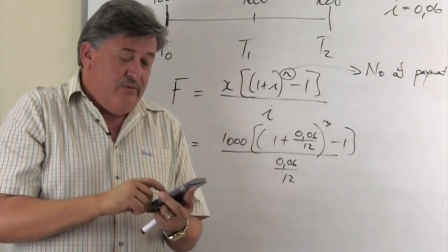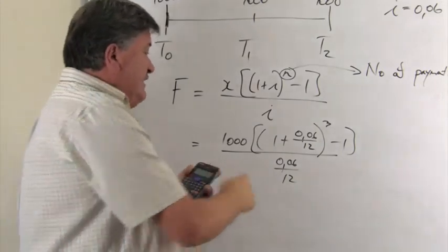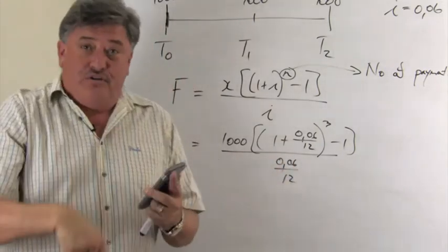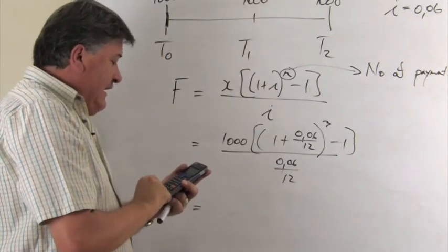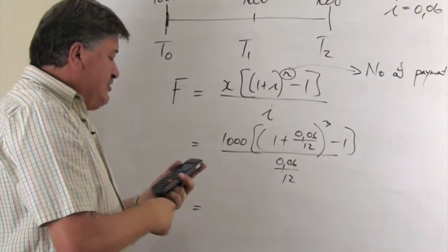So therefore, I close the bracket. Now I move to the denominator, which is also a fraction. So I open up a fraction. 0.06. I move down. I put down the 12. I push the equal.